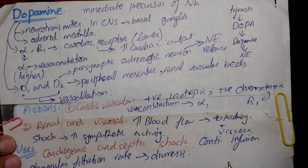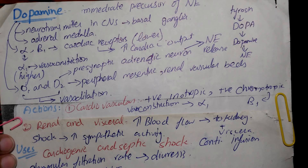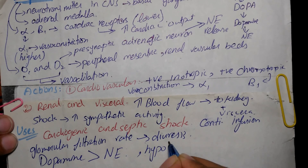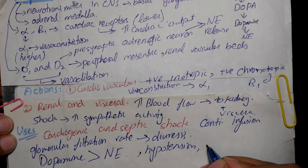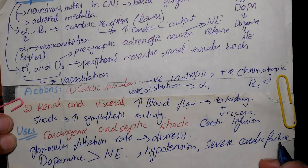In this regard, dopamine is far superior to norepinephrine, because blood supply to the kidney may diminish with norepinephrine and this can cause renal shutdown. Dopamine is also used to treat hypotension and severe cardiac failure, primarily in patients with normal or lower peripheral vascular resistance.